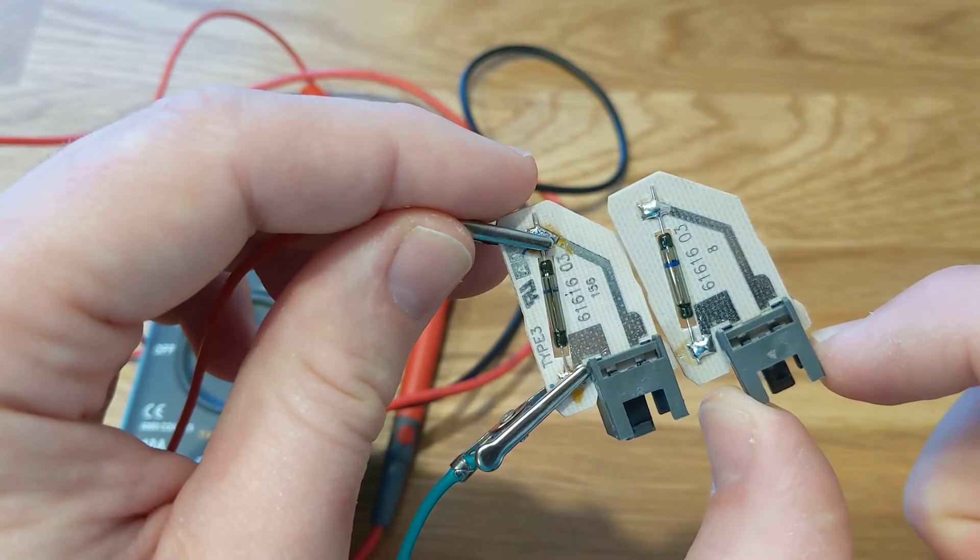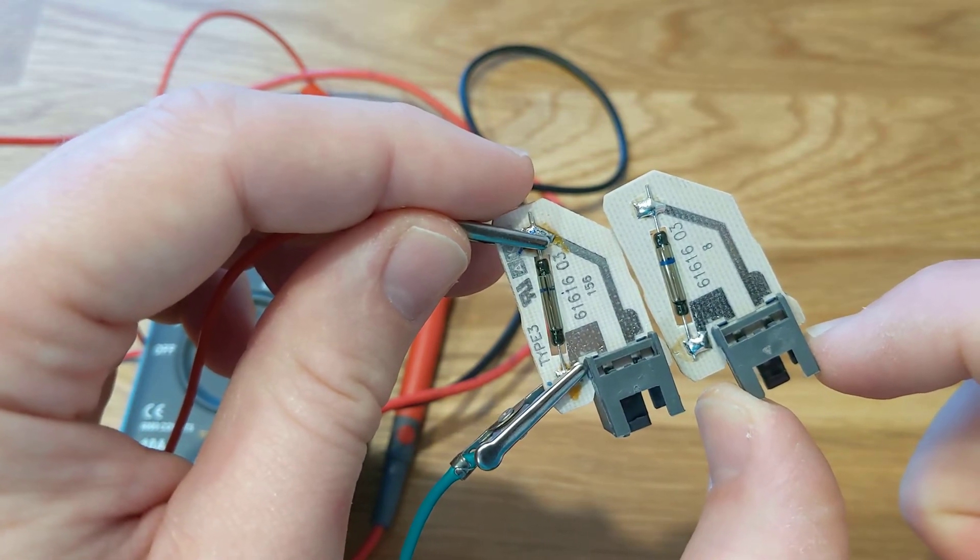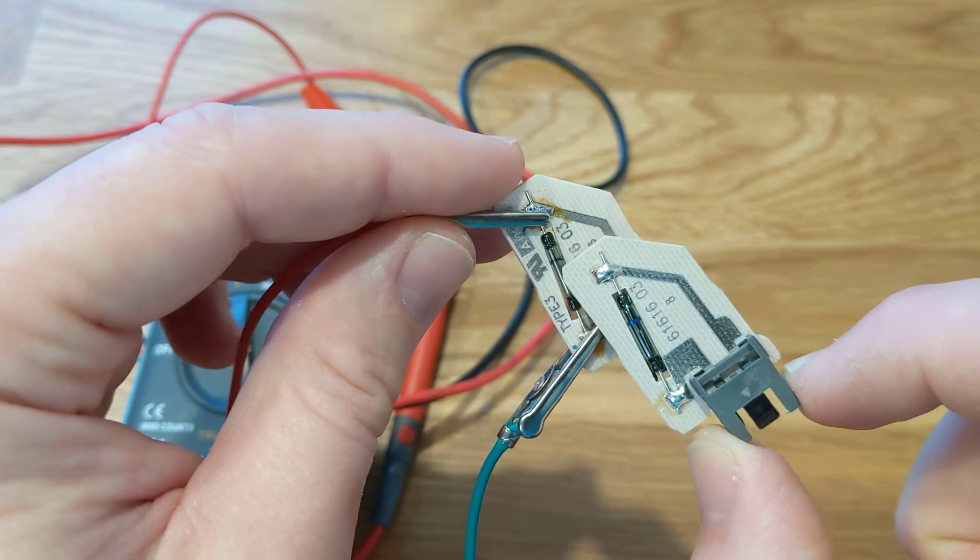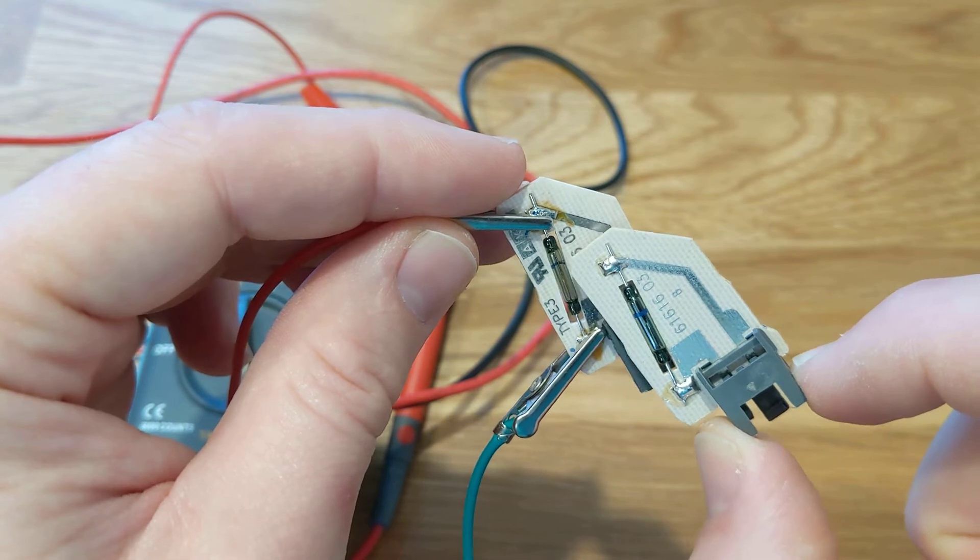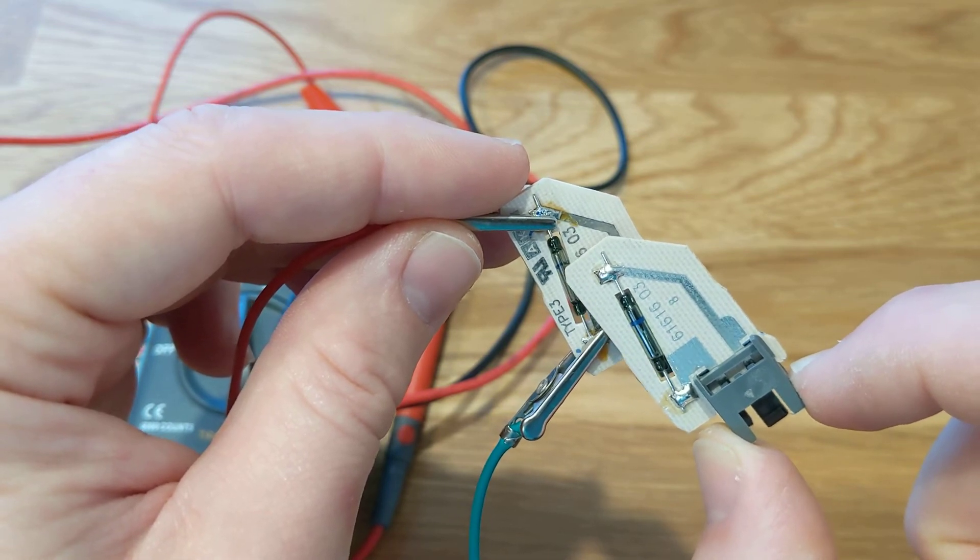What I'm guessing happened is the current goes through the contacts and fries them up, so there's a build-up of either burnt material or debris, and that is preventing it from short-circuiting.